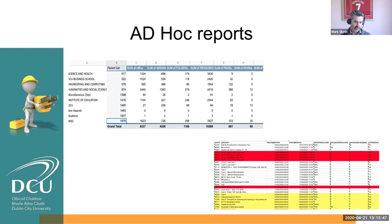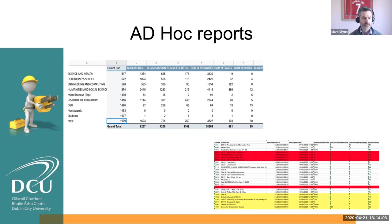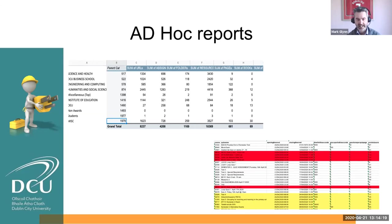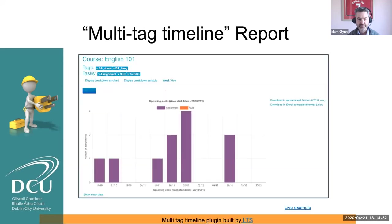Moving on to the plugins, we have a plugin called the ad hoc reports. Just two tables on this particular screen. What we were able to do is look at the engagement across our faculty over the last couple of weeks since COVID-19, see where the activity is, and see where we need to support staff. The bottom table tells us what quizzes are coming up and where we will potentially have issues in terms of server loads — 200 students logging on to do a particular quiz at a particular time. We can reach out to lecturers in advance and try to manage that distribution of assessments.